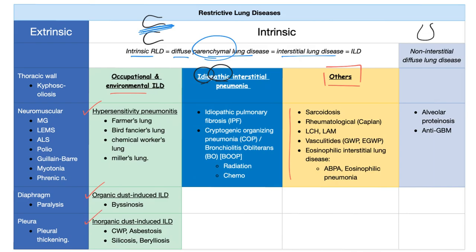Occupational and environmental causes have three subtypes: hypersensitivity pneumonitides — such as farmer's lung, bird fancier's lung, chemical worker's lung, miller's lung, coffee maker's lung — organic dust-induced interstitial lung disease such as byssinosis in cotton workers, and inorganic dust-induced interstitial lung disease such as coal worker's pneumoconiosis, asbestosis, silicosis, and berylliosis.